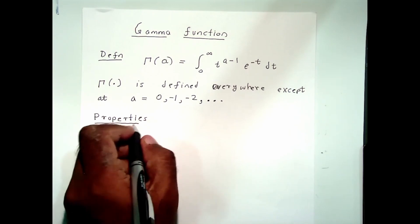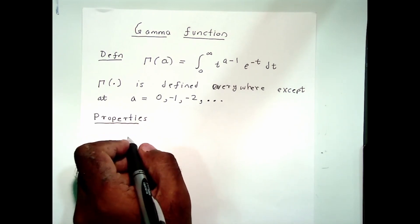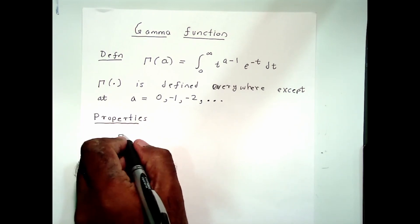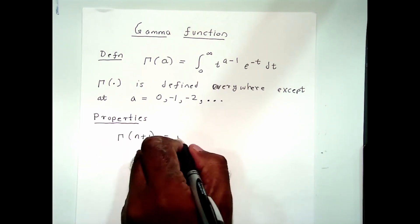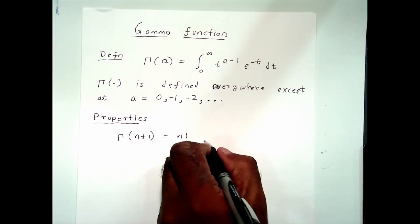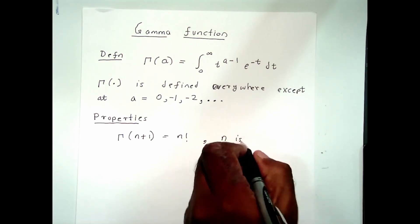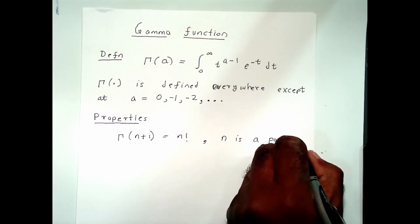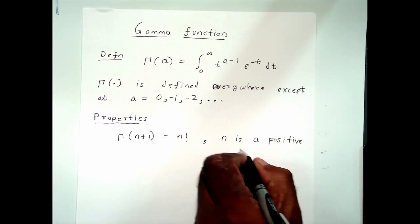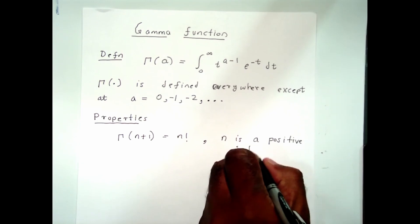Some properties of the gamma function: gamma at n plus 1, when n is a positive integer, is equal to n factorial. So here n is a positive integer.